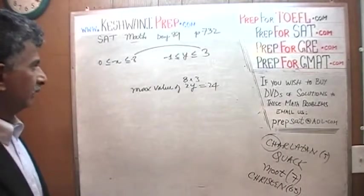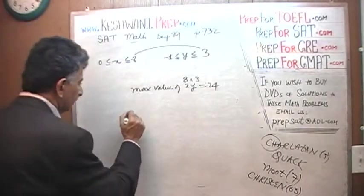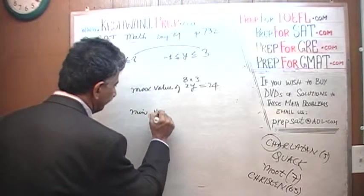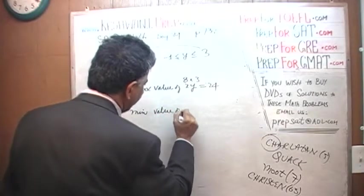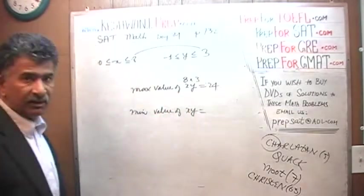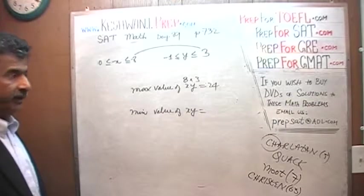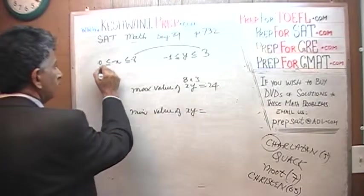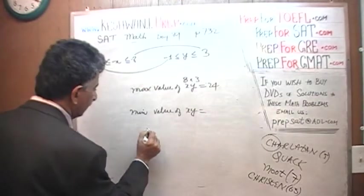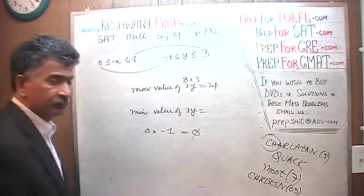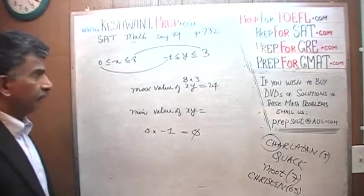The question is, what's the minimum value? That's the simple part, what's the minimum value? The minimum value of X times Y, and that's the tricky part. We have to look at all three combinations. Don't just do this part, don't just do 0 times negative 1 is 0 and don't just assume that that's the minimum. Do all three of them.